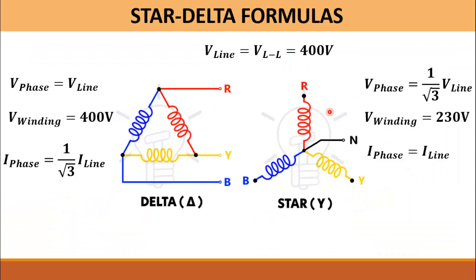Let's have a glimpse of the star delta formulas. Here I have taken V line which is equal to V line-to-line and that is equal to 400 volts. So in delta configuration, the voltage across each winding of the motor is equal to V line, which is equal to 400 volts, whereas the current in each winding of the motor will be equal to I line over √3.